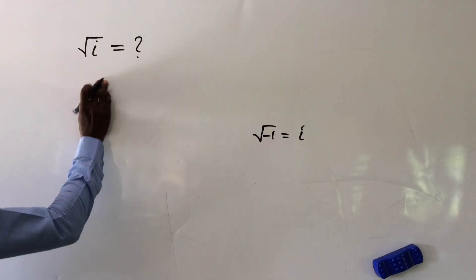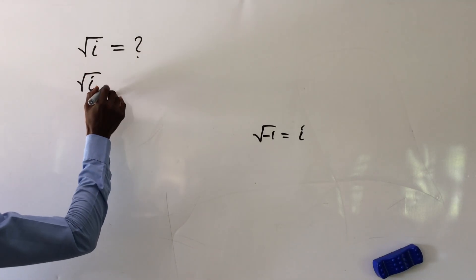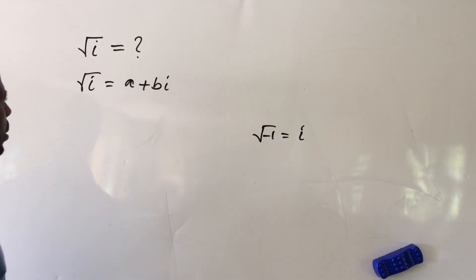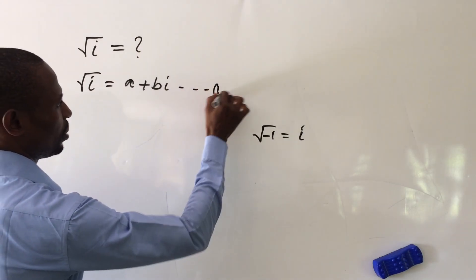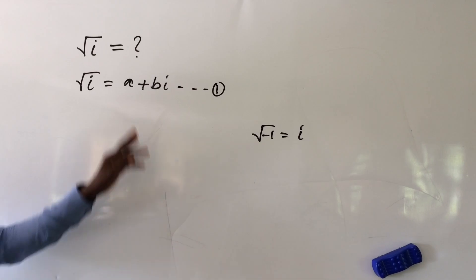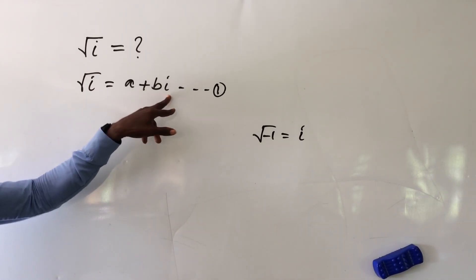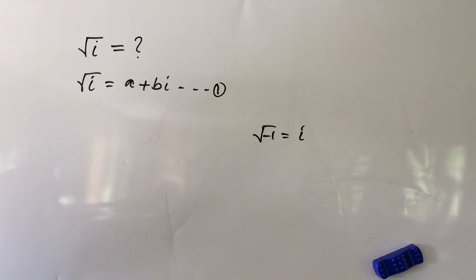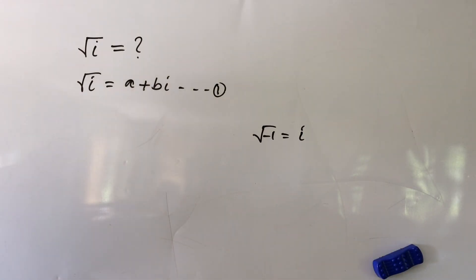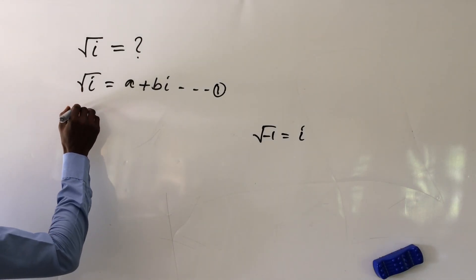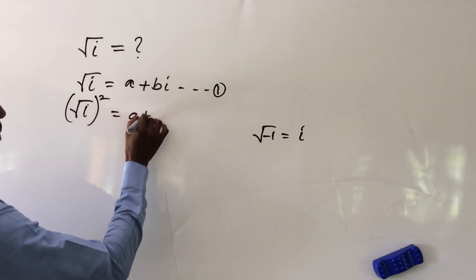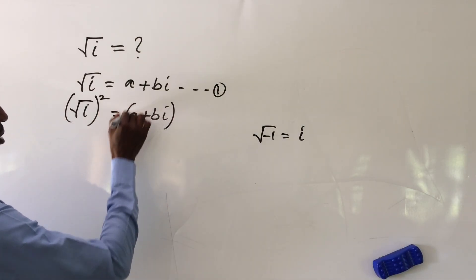Let's recall that the square root of i is equal to a plus bi — let's take this as equation one. We're referencing this identity where a is the real number part and b is multiplying the imaginary number. To work with this, I'll square both sides of the equation, giving us: (√i)² equals (a + bi)².